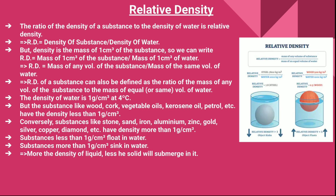Now we come to relative density. Relative density is a pure ratio — it is the ratio of the density of a substance to the density of water. So RD equals density of a substance divided by density of water. Since density is the mass of 1 cm³ of a substance, we can write: RD equals mass of 1 cm³ of the substance divided by mass of 1 cm³ of water.